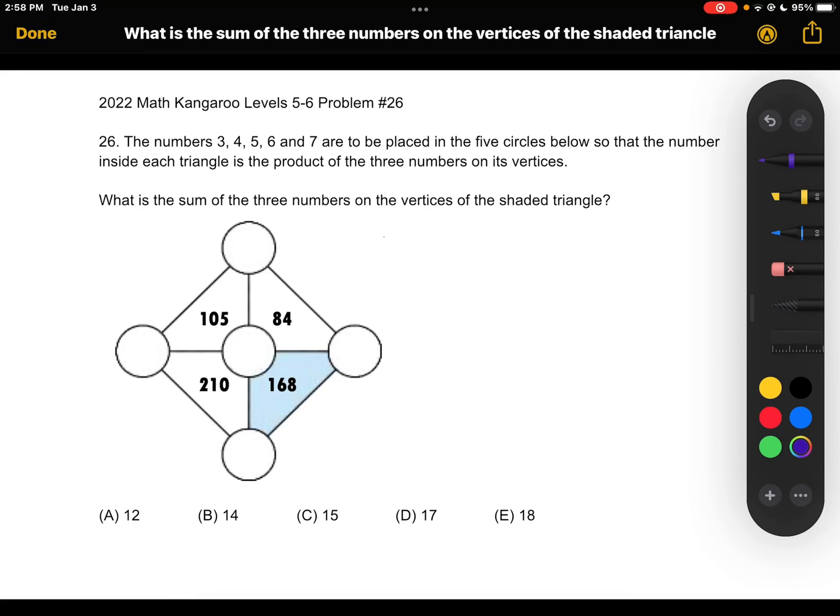This is the 2022 Math Kangaroo Levels 5-6, Problem No. 26. The numbers 3, 4, 5, 6, and 7 are to be placed in the five circles so that the number inside each circle is the product of the three numbers on its vertices. What is the sum of the three numbers on the vertices of the shaded triangle?